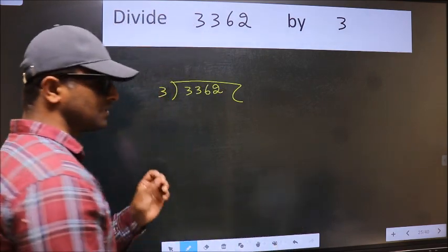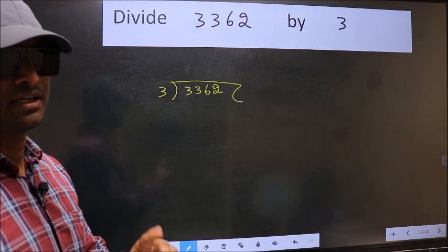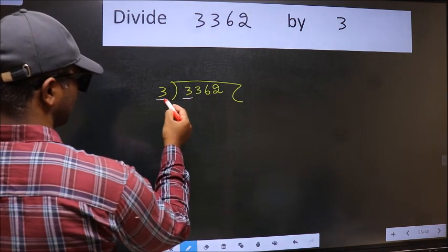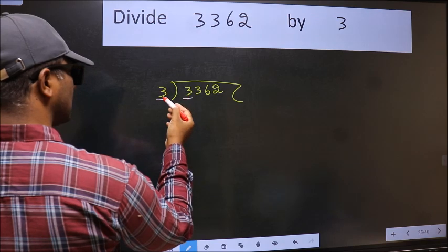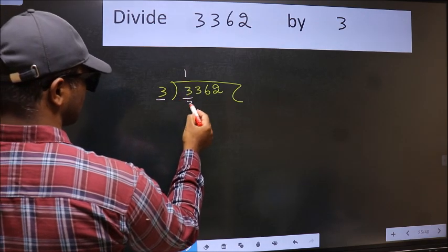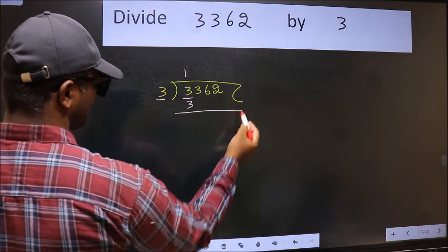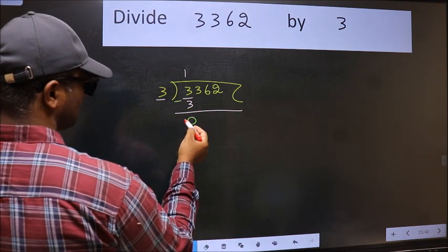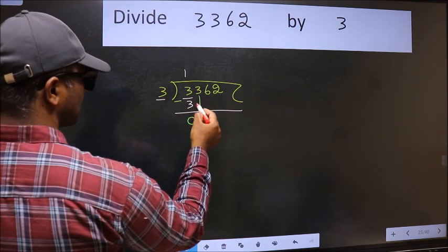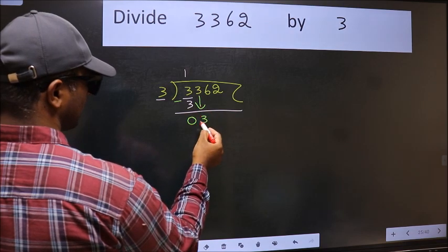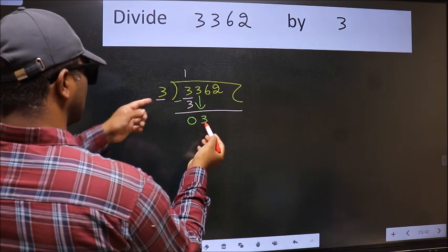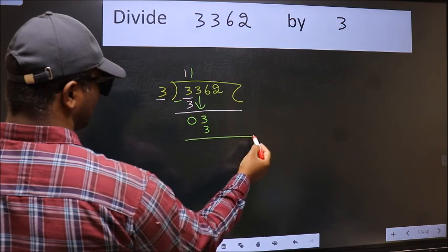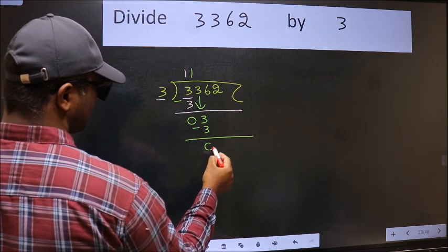This is your step 1. Here we have 3 and here 3. When do we get 3 in the 3 table? 3 once is 3. Now we should subtract. We get 0. After this, bring down the beside number. So 3 down. When do we get 3 in the 3 table? 3 once is 3. Now we should subtract. We get 0.